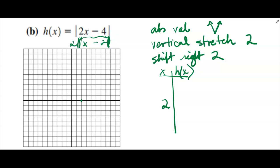2 minus 2, 0. 0 times 2, 0. Yep, it's that point right there.